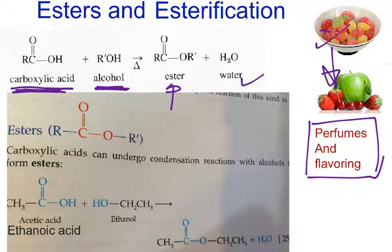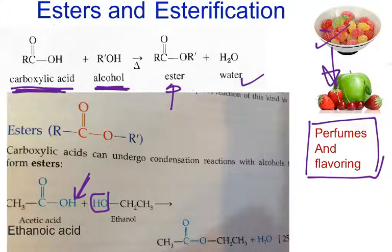Now, we can memorize it like this. Acids, if you remember the Arrhenius theory, give us H+. So we can think of the H+ of the acid and the OH of the alcohol — the two things that identify the groups — coming together to give us water.